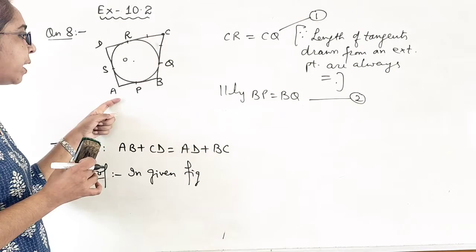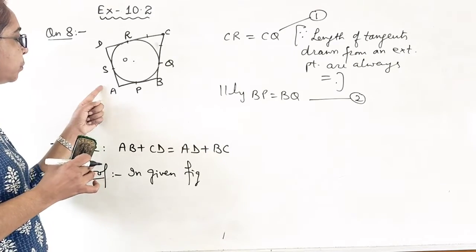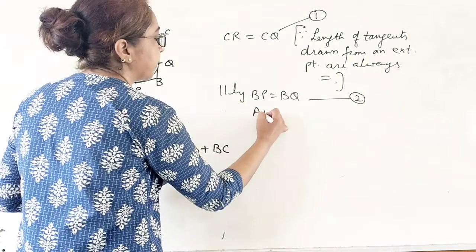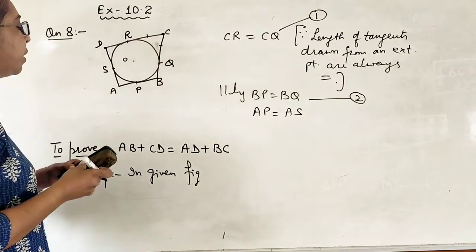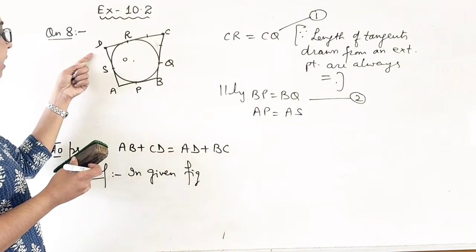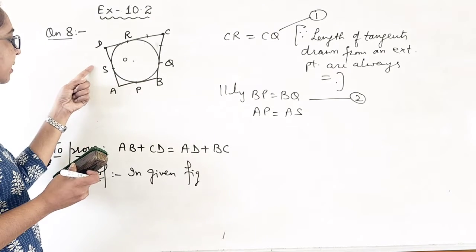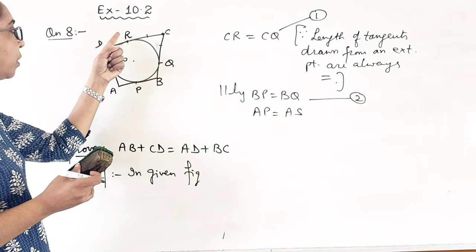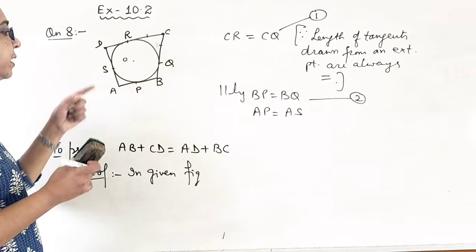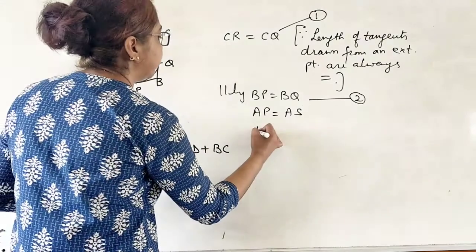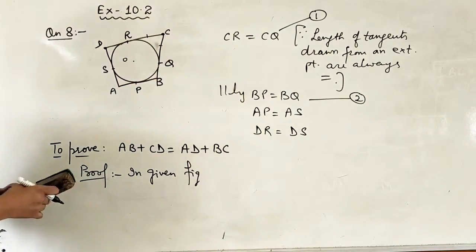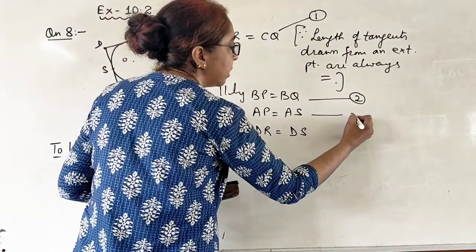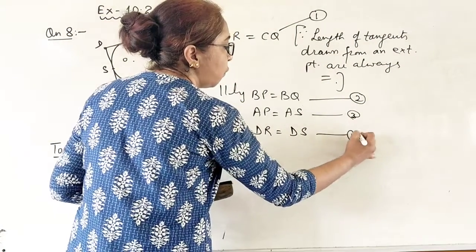And if this is an external point, A is an external point, what I should write? I should write AP equal to AS. And if D is an external point, what I get? I get DS is equal to DR or DR equal to DS. So this is number 3, number 4.